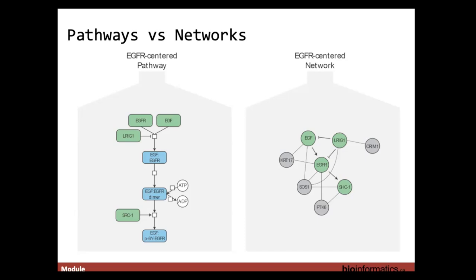For a pathway you classically think of a start and end point — top to bottom. Networks don't necessarily have a start or end point. Pathways often work together, and when multiple biological pathways interact they form a biological network. Researchers learn a great deal about human disease by studying these, identifying which genes, proteins, and molecules are involved and what goes wrong in disease.